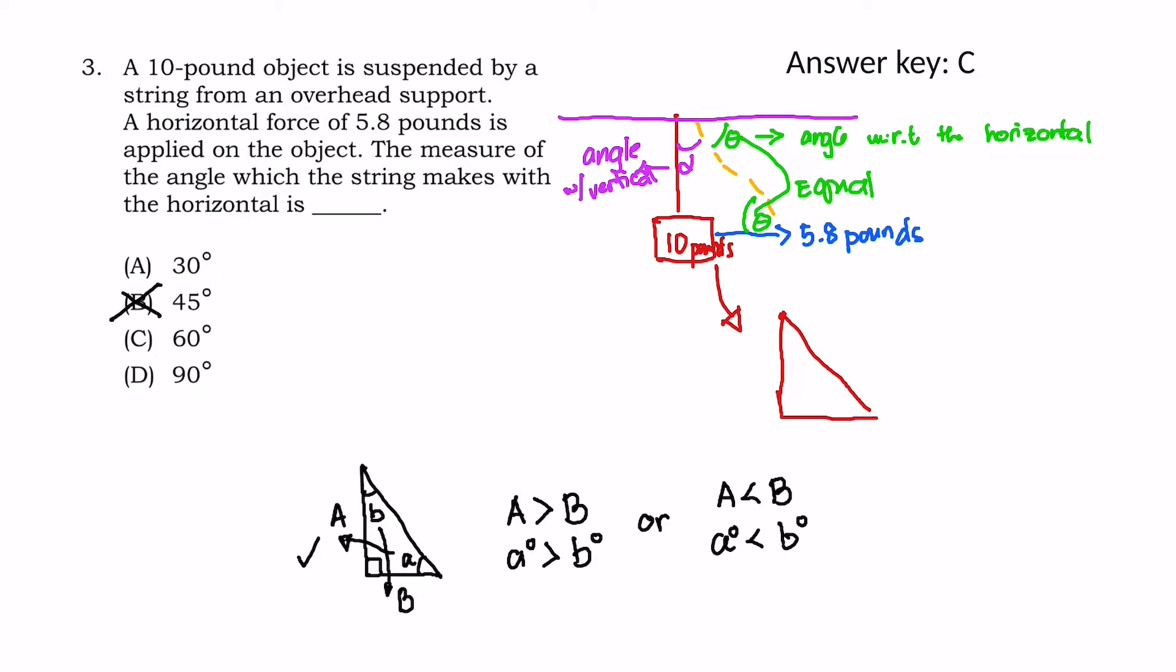A right triangle with legs of 10 and a base of 5.8 with 90 degrees and the angle theta here, which is the one that we're looking for.